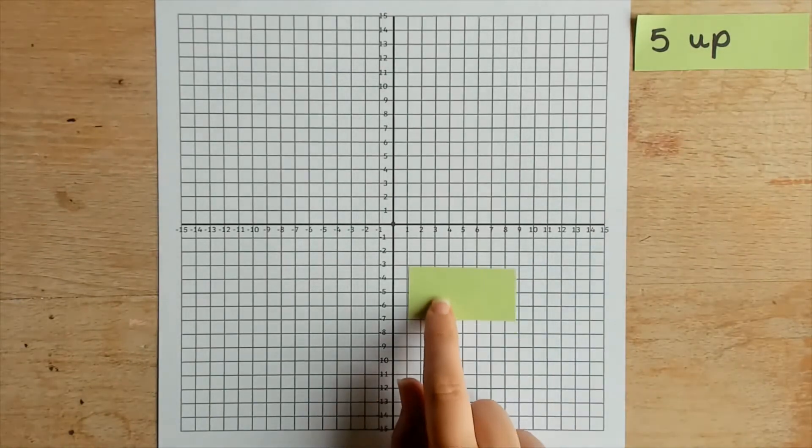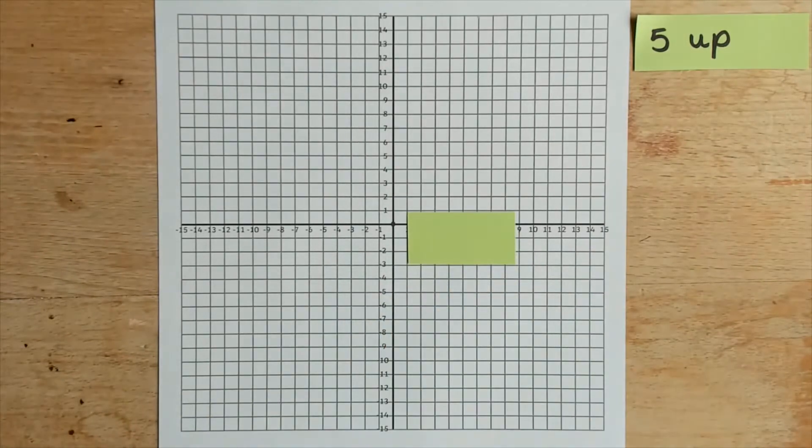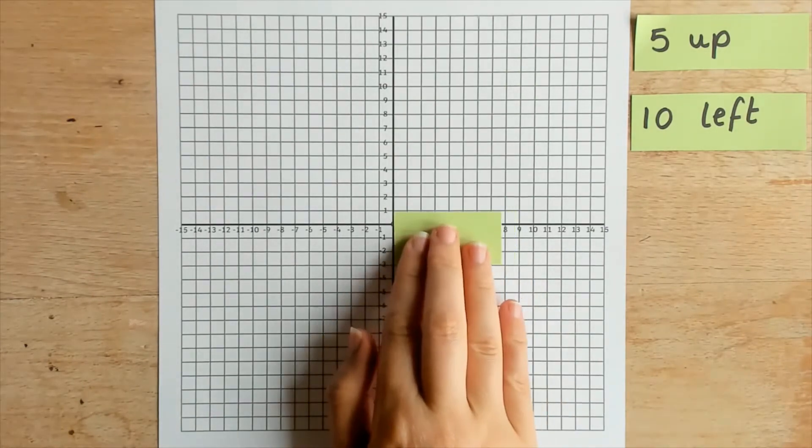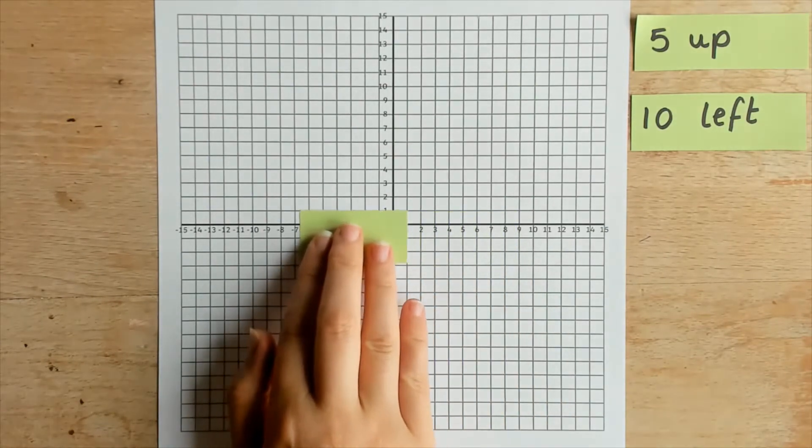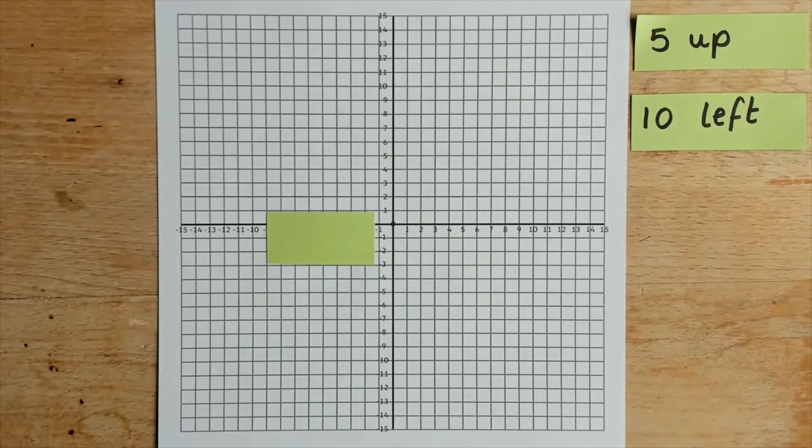Could they work in pairs and start to give each other instructions? Could they translate the shape and then trace around it? Noticing how the size and orientation of the original shape must never change.